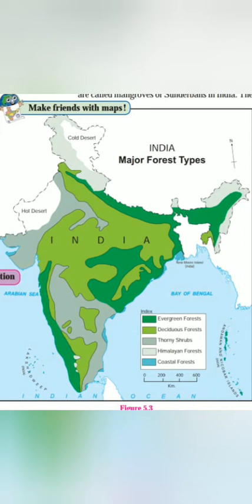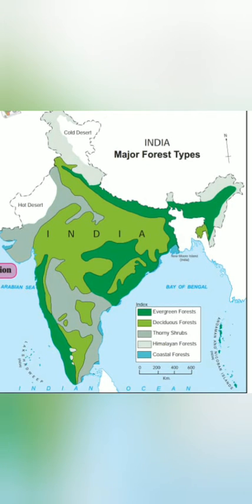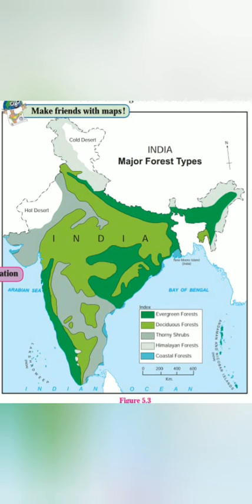In the Himalayas, three types of forests are found according to altitude. At the highest altitude, seasonally flowering trees are found. At medium altitude, coniferous trees like pine, deodar, and fir grow. At the foothills, a mixed type of forest is found where both deciduous and coniferous trees are mixed together.